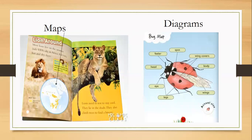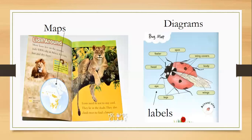Another helpful text feature is diagrams. Diagrams help us learn details about different things we're reading about. This diagram was from a book about ladybugs and showed all the different parts of the ladybug. It's usually blown up real big, and then it points to each part with labels. So it's a diagram that labels each and every part of the ladybug.